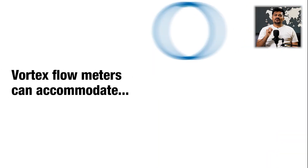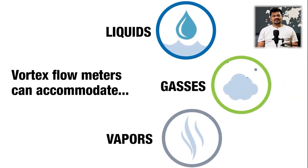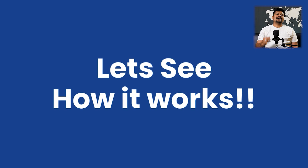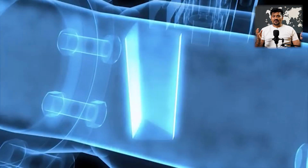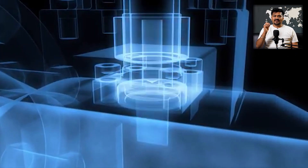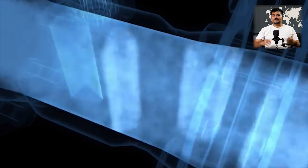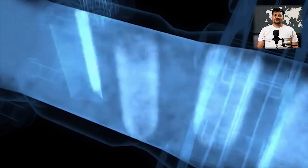Vortex flow meters can measure liquids, gases, and vapor, and can withstand high process pressures and temperatures. We call it a vortex flow meter because vortices are caused by placing an obstruction called a shedder bar in the flow path. These vortices of alternating differential pressures will cause a small sensing device to oscillate.